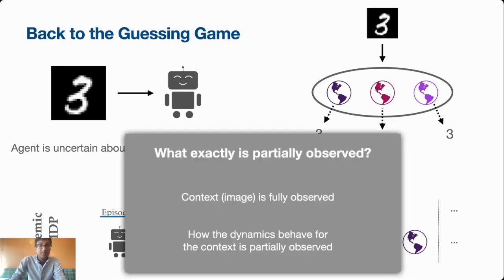Let's clarify what exactly is being partially observed here. It's not the context. The context, which is the image, is fully observed. The agent receives this in its observation vector. What's not provided is how the dynamics are going to behave for this particular context. The agent doesn't know that for this image, is the world going to behave like it was a 3, or is the world going to behave like it was a 6? And the agent needs to reason about that partial observability.